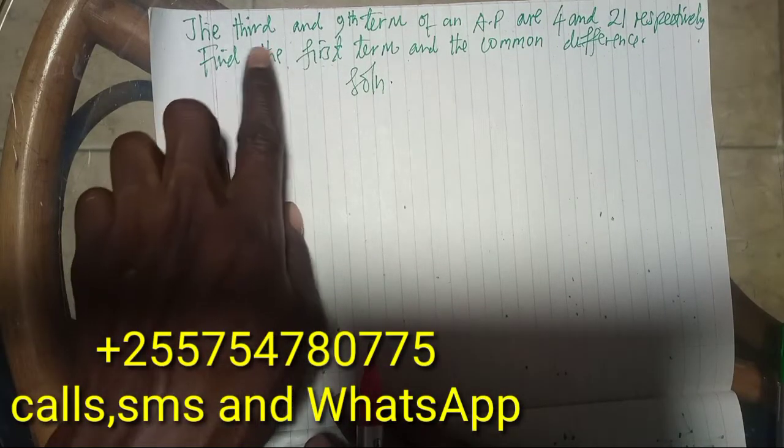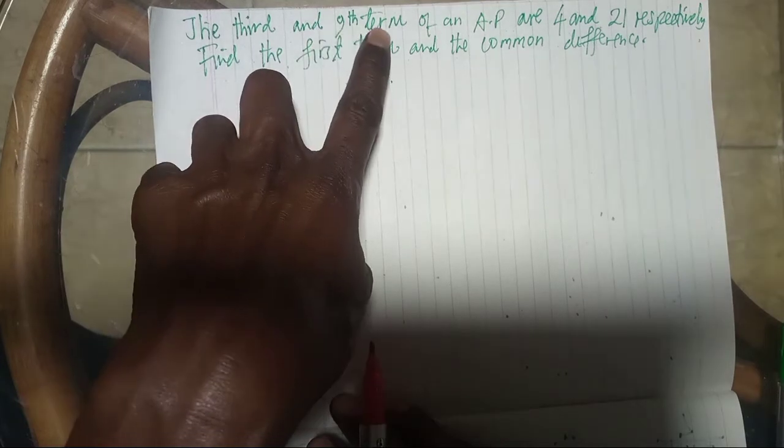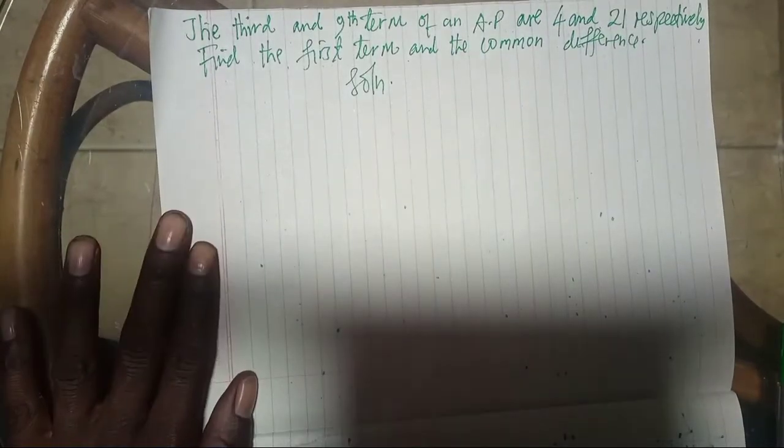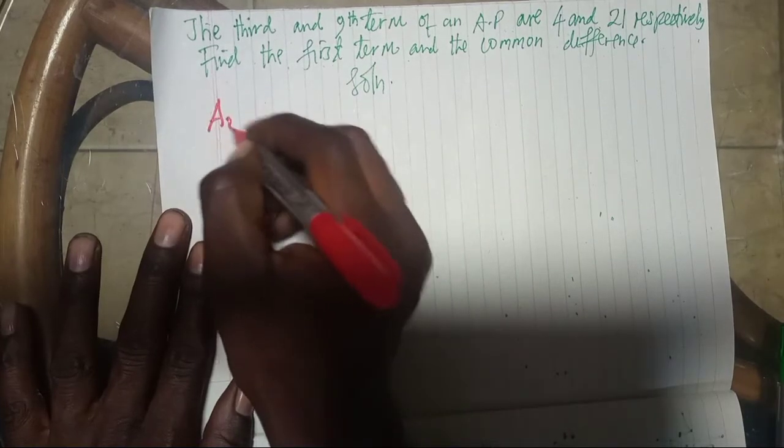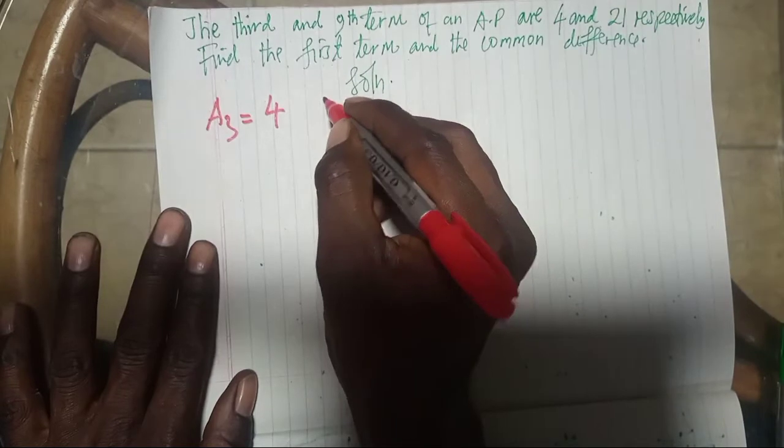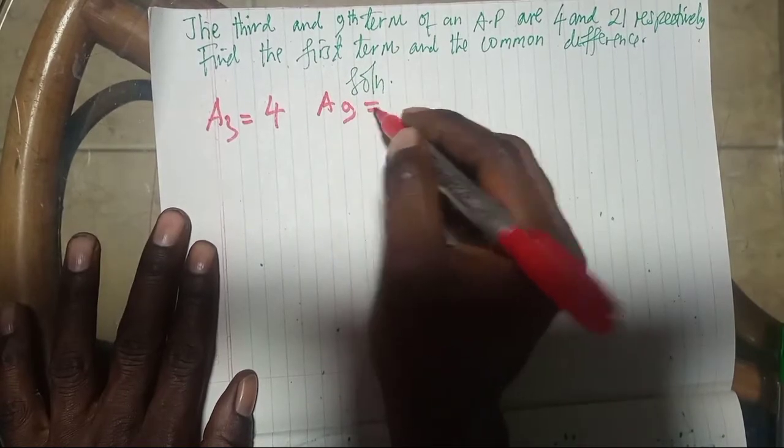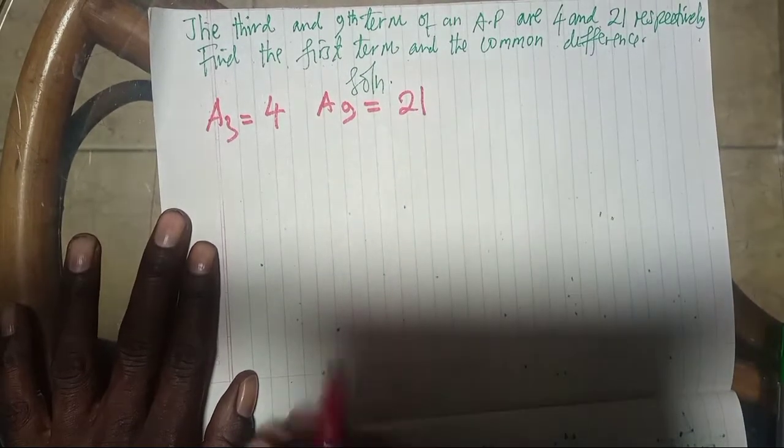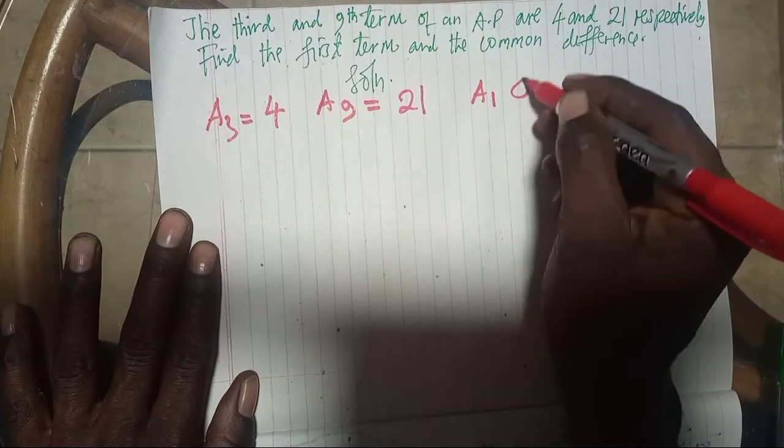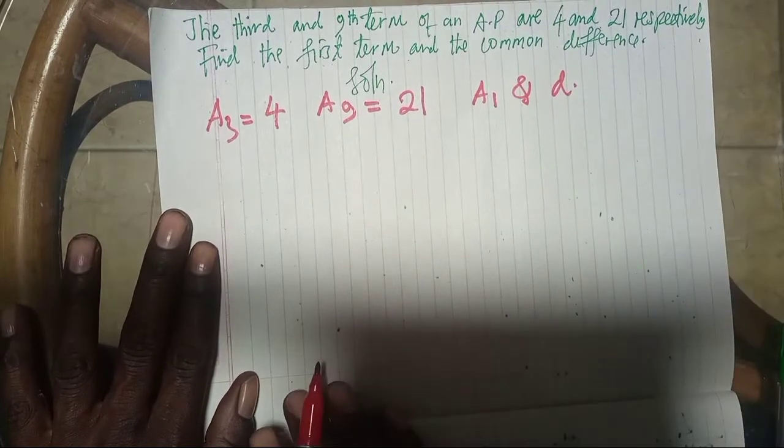The question is: the third and ninth term of an AP are 4 and 21. This means A3 is equal to 4 and A9 is equal to 21. The question is to determine A1 and determine the value of D.